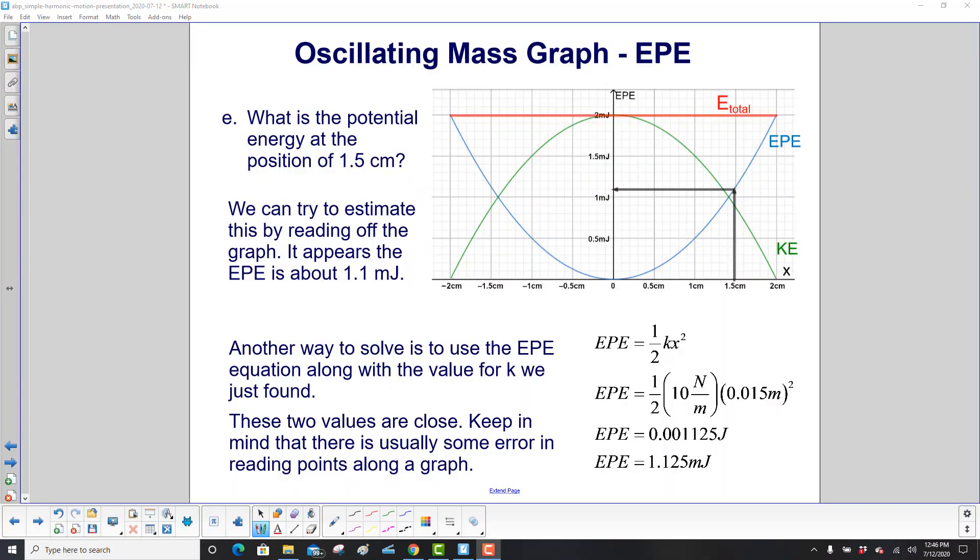What is the potential energy at the position of 1.5 centimeters? Well, we can estimate it by reading off the graph. We go up until we hit the EPE curve, and then over to the energy. And it looks like it's about 1.1 millijoules.